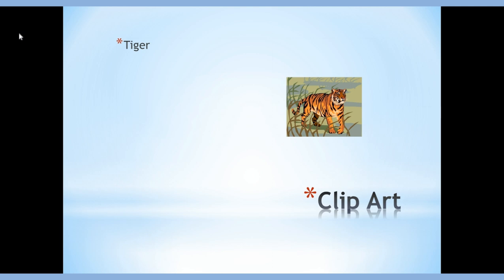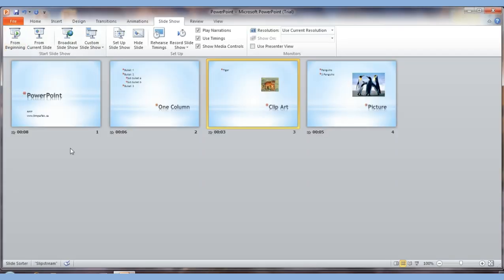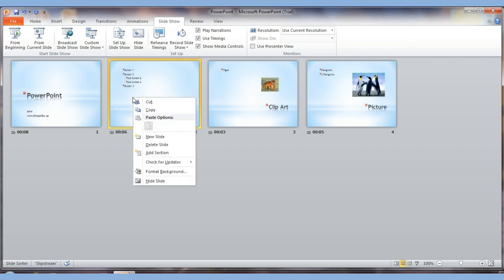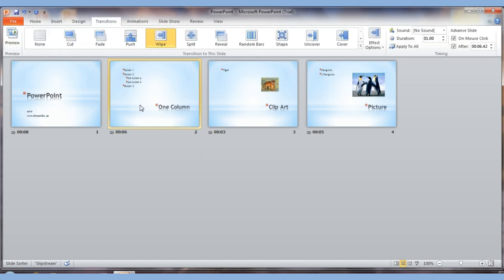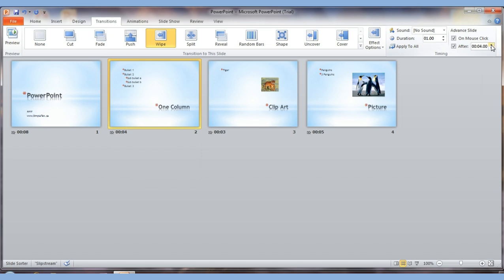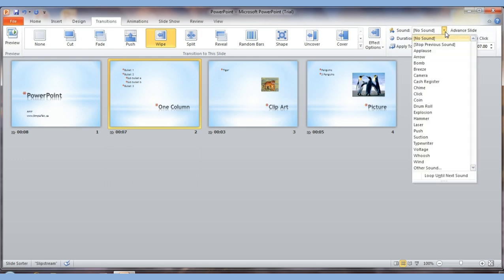In slide sorter view you can see the timing displayed under each slide — for example eight seconds, six seconds, three seconds. If you want to change an individual slide's timing, click on that slide, go to Transitions, and you'll see the duration — say 6.42 seconds — which you can increase or reduce as needed.